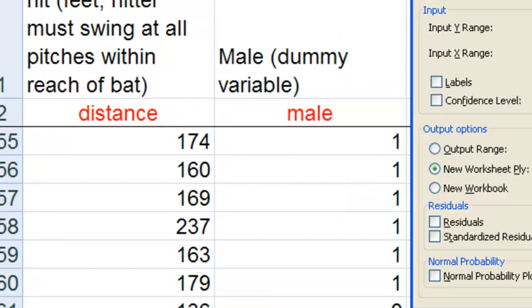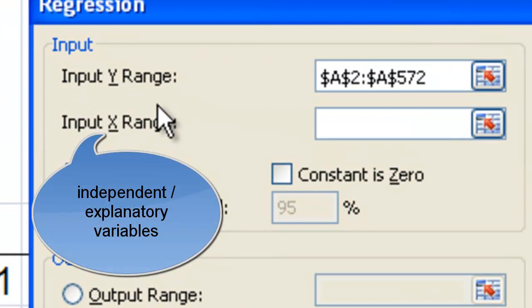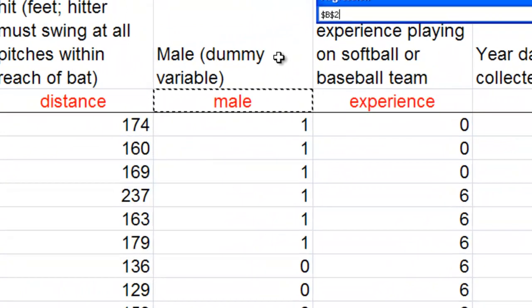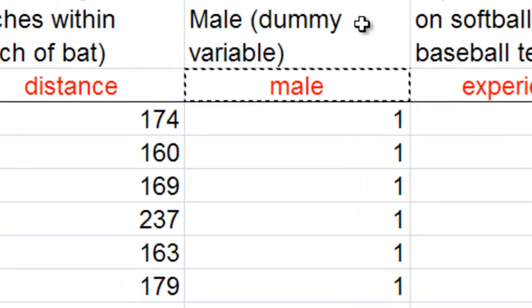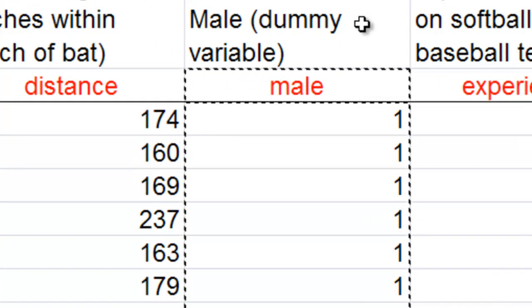Then I'm going to come back to my dialog box and for input X range, X is always the variables that we are predicting with. In this example, there's only one variable we are using to predict hitting distances, male. So I'm going to first select the variable name, male and then all the data underneath it.